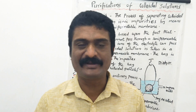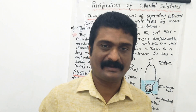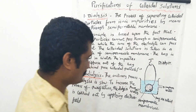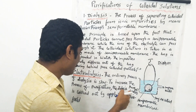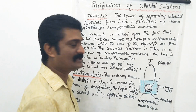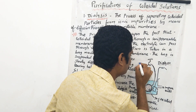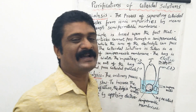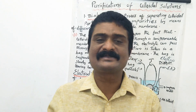The ordinary process of dialysis is very slow. To increase the speed, dialysis can be accelerated by applying an electric field, and the process is then called electrodialysis. To increase the rate of purification, dialysis is carried out by applying an electric field, and this process is called electrodialysis.